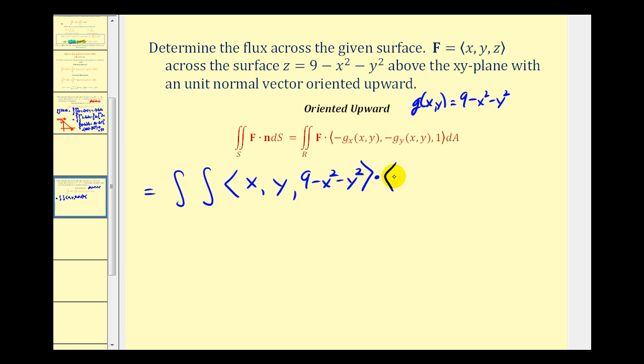We'll dot this with the opposite of the partial derivative of g with respect to x. Well, the partial derivative would be negative two x, and the opposite of that would be positive two x. And then for the partial derivative of g with respect to y, that would be negative two y, and then we'll take the opposite of that. That will be two y, and the z component will be one, differential A.